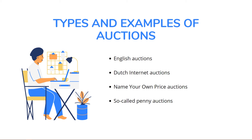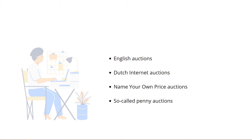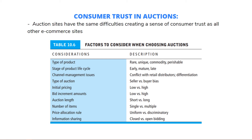Auctions can be an appropriate channel for businesses to sell items in a variety of situations. There is a table that shows factors to consider when choosing auctions. The considerations include: type of product, stage of product life cycle, channel management issues, type of auction, initial pricing, bid increment amount, auction length, number of items, price allocation rule, and information sharing.